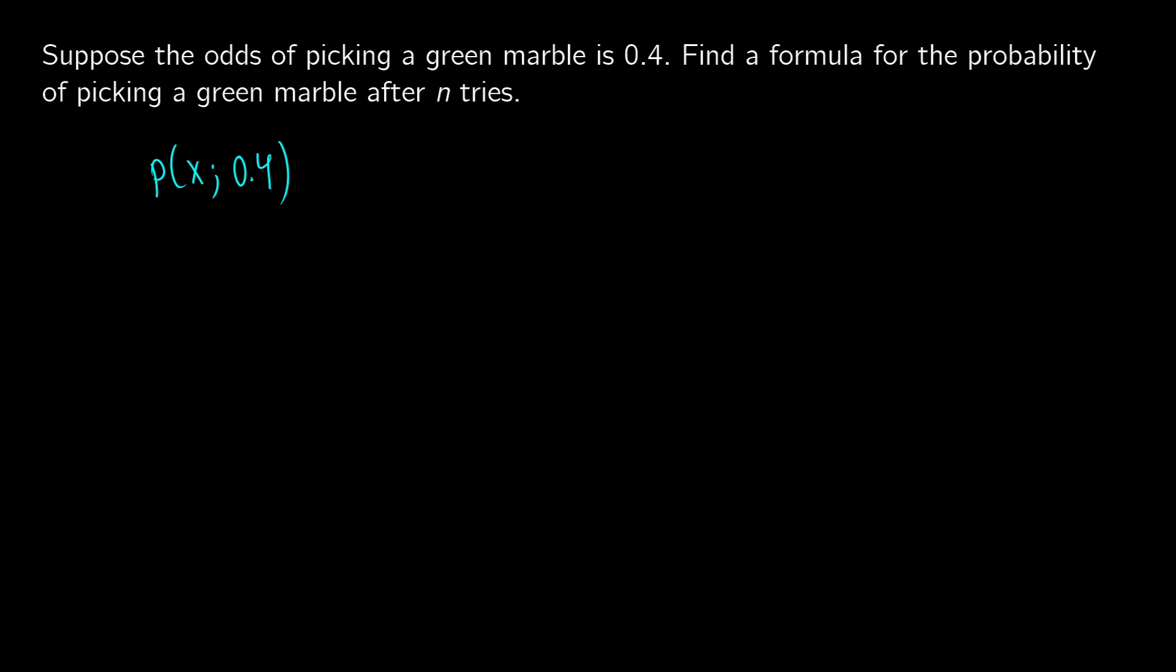Let's say we get it after one try. What is this going to look like? This would be the probability that x is equal to 1, which means it's the probability of just getting a green marble right away. So this would be 0.4.